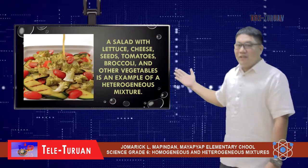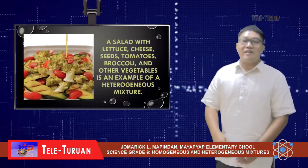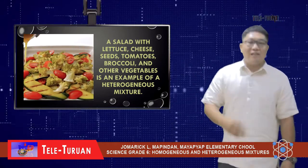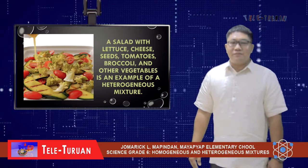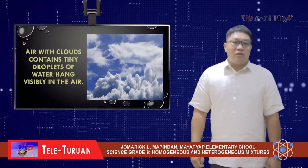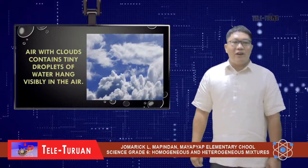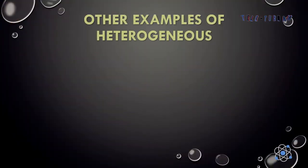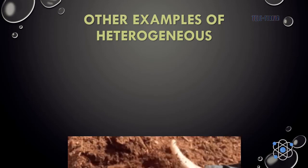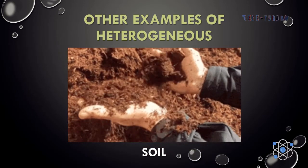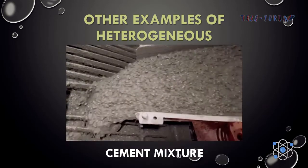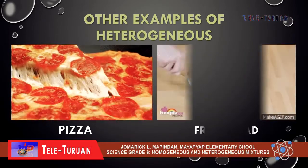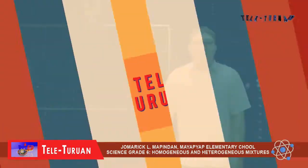A salad with lettuce, cheese, seeds, tomatoes, broccoli, and other vegetables is an example of a heterogeneous mixture. Air with clouds contains tiny droplets of water hanging visibly in the air. Let's have other examples of heterogeneous mixture: soil, cement mixture, pizza, and fruit salad.